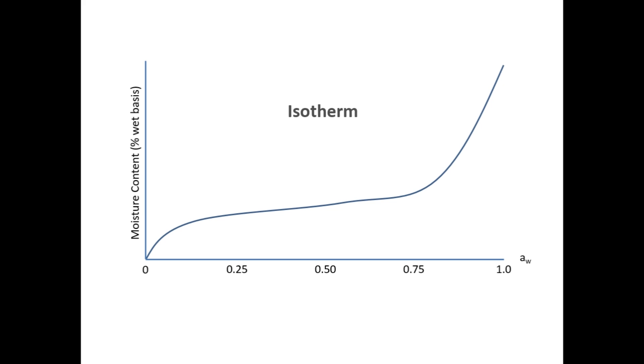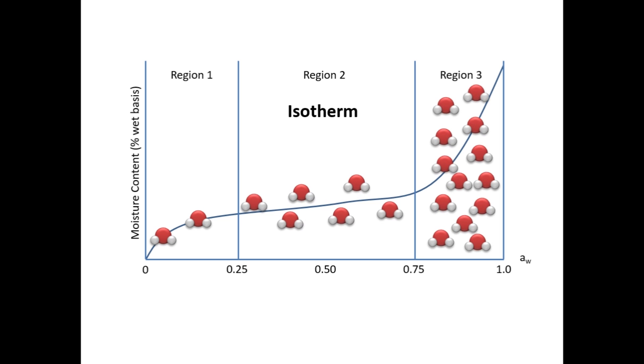We call this type of graph an isotherm, which we often divide into three regions that show different water mobility and food properties. In region 1, moisture content and water activity are both low. Water molecules are tightly held by the food and have limited mobility. In region 2, moisture content is still relatively low, but water activity increases rapidly with small increases in moisture. Water molecules interact with the food but have some mobility. In region 3, both moisture content and water activity are high, and water molecules have high mobility.